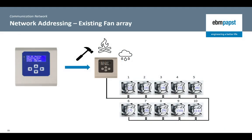The option to install a new MDC controller on an existing fan array should only be used to replace an MDC controller that has become damaged. When this option is chosen, the controller starts the fan search by looking for the first fan with Modbus Device Address 2. Once found, the controller looks for Modbus Device Address 3, 4, 5, and so on until all of the fans in the array are found.